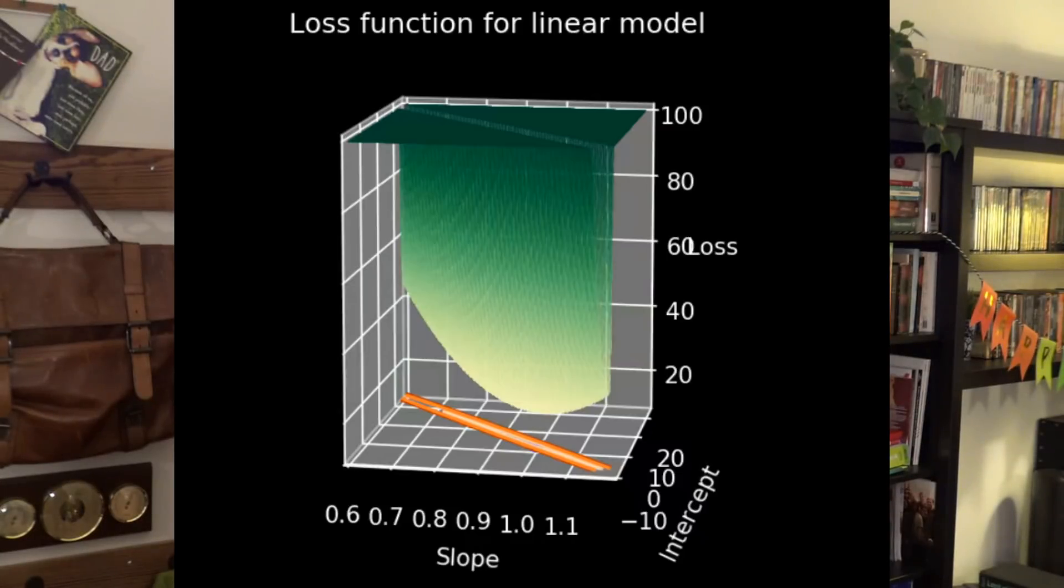The loss function continues to get higher and steeper the farther it gets away from the bottom of that valley. We're going to bypass the second obvious solution to this problem, which is just to choose the lowest point out of all of them. We're going to pretend for now that we don't know where that lowest point is.